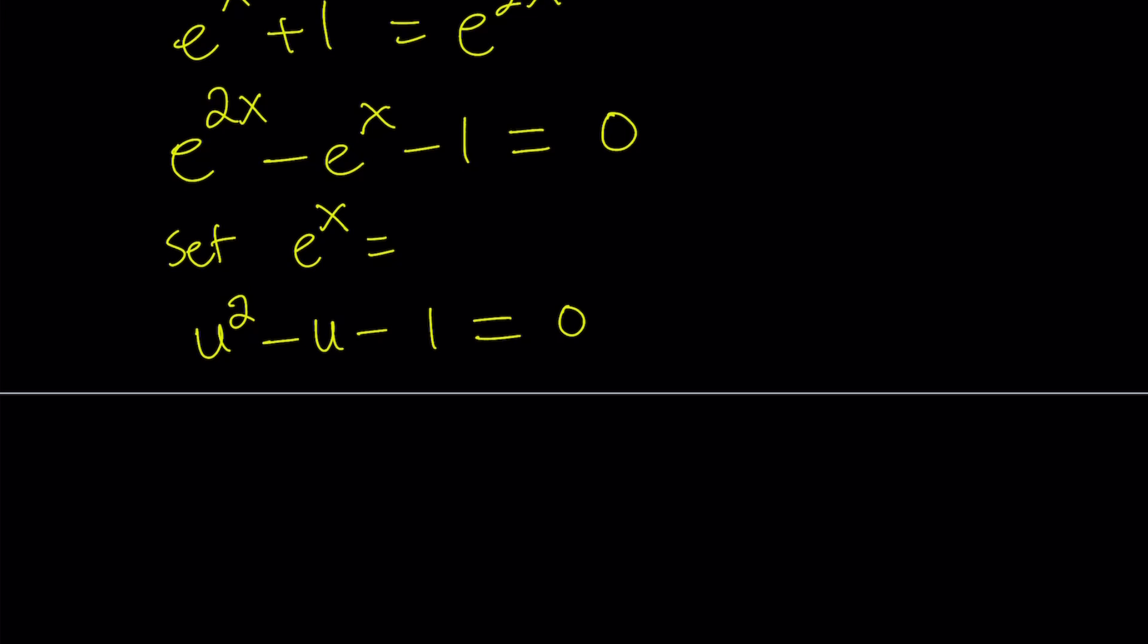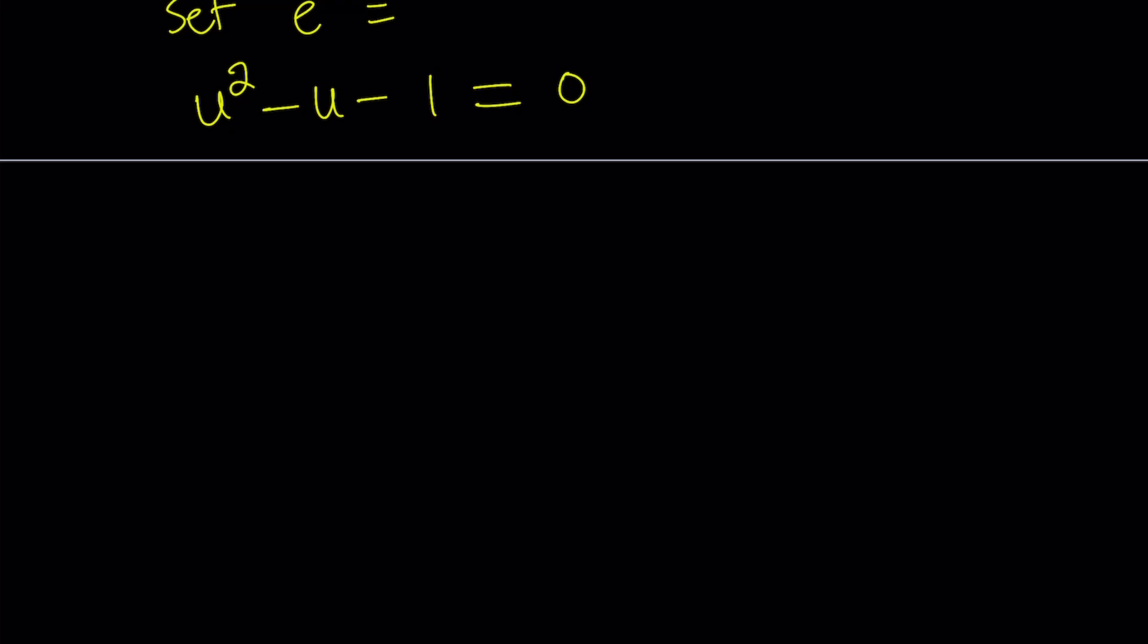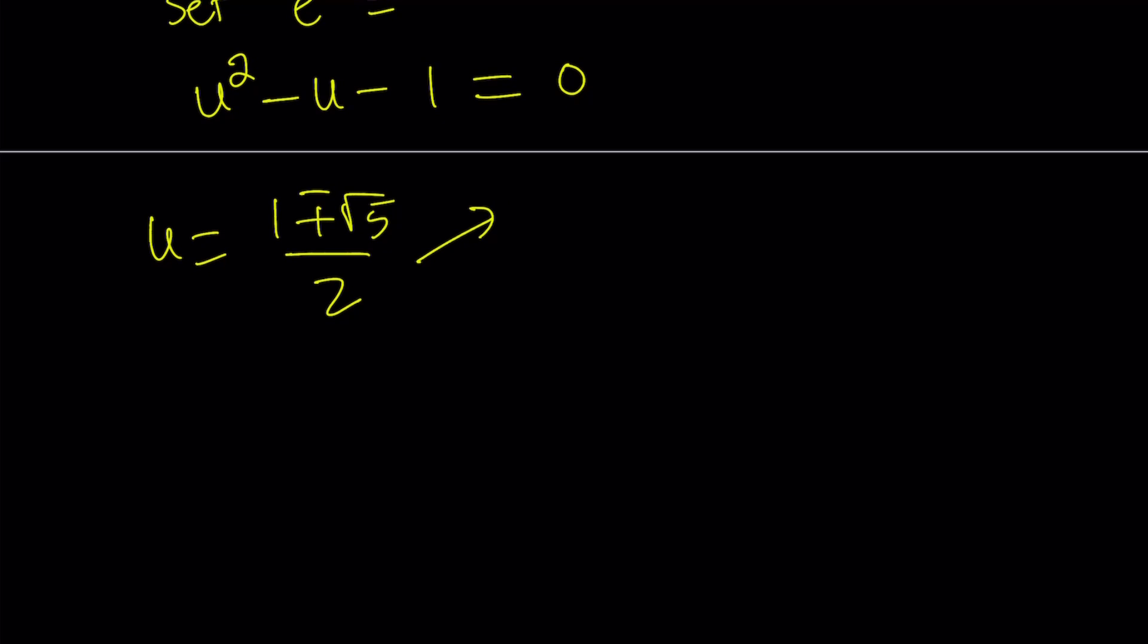you get u² - u - 1 = 0. And if you solve this equation, this is where it starts smelling golden. From here, u is either (1 + √5)/2 or (1 - √5)/2. So I'm going to write it as (1 ± √5)/2 by the quadratic formula. And then I'm splitting up into u₁ and u₂, so there are two roots. Suppose the first one is (1 + √5)/2 and the second one is (1 - √5)/2.